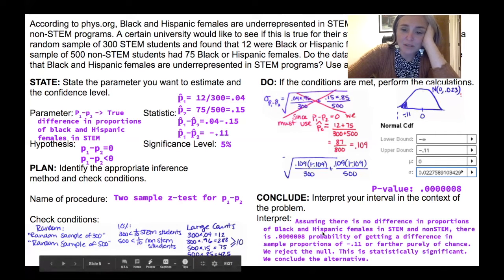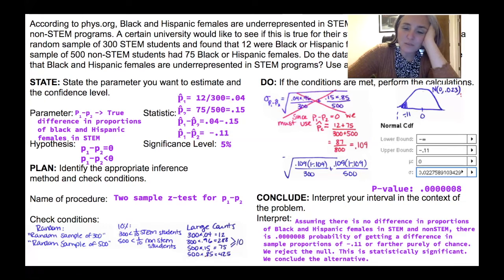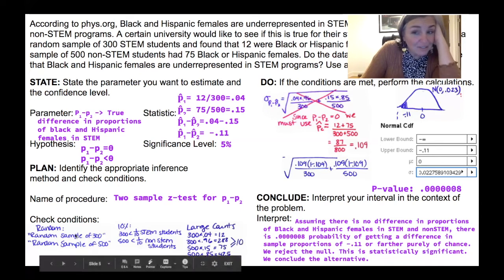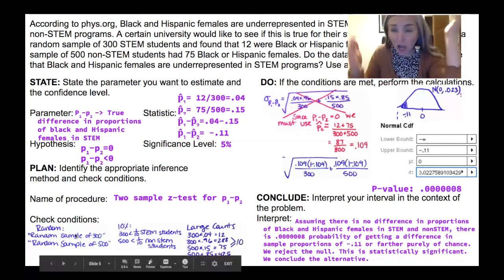And I ended up with a P value of 0.00008. So it's pretty small, shockingly small. It's so shockingly small, less than 5% that I'm going to go right ahead and reject the null hypothesis, which says that there's no difference between STEM and non-STEM.